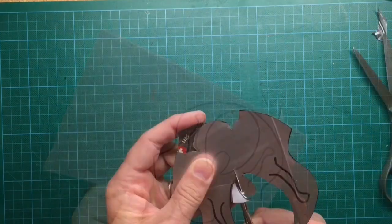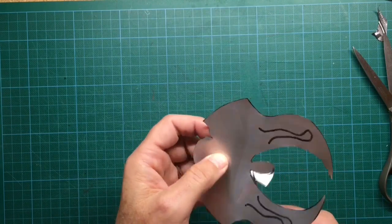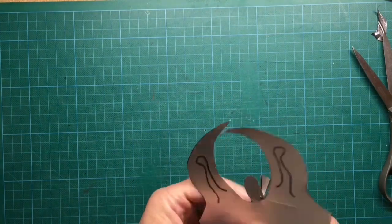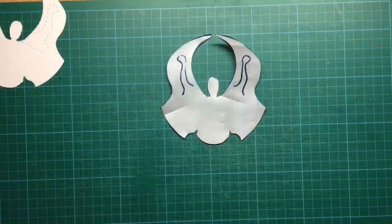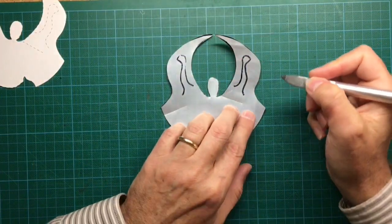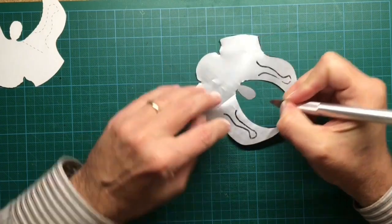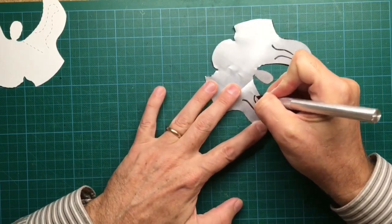Then cut along the marker lines with scissors. Concerning the arms, follow the outlines with a knife.